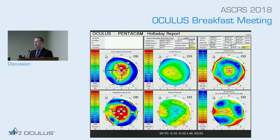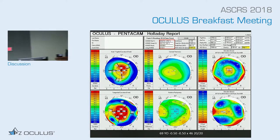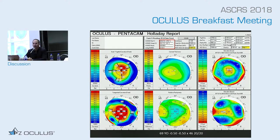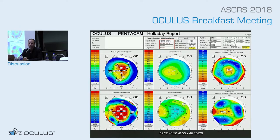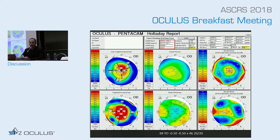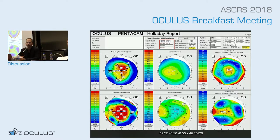Dr. Trattler, how do you interpret this and what are you thinking in terms of IOL selection? I typically look at the sagittal view — the upper left screen — and you can see an area of red, so it's somewhat steep. The K is in the 46s, so I'm thinking this patient will do best with a monofocal neutral spheric IOL, because this patient will probably get more depth of field because of that steep central area.